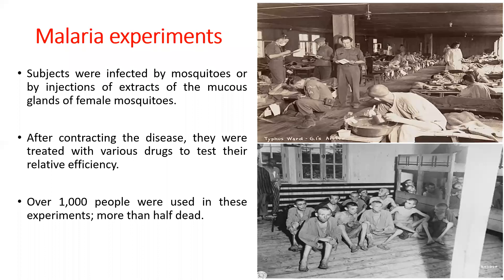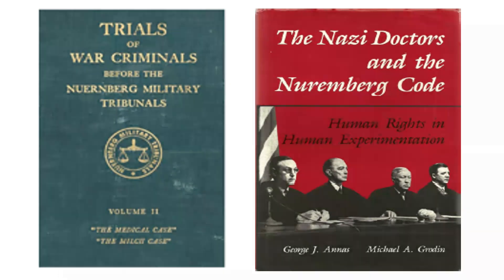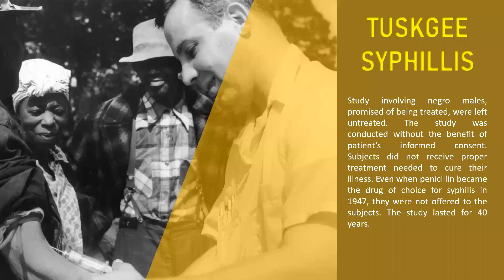There were also sulfonamide gas experiments where prisoners were kept in gas chambers, poisonous gases were released, and burns and injuries from toxic gas were studied. Books have been published on war crimes — the trial of war crimes at Nuremberg military tribunals. Most importantly, these prisoners had never given consent for participation in these experiments, and by the end of the experiment most of them died.